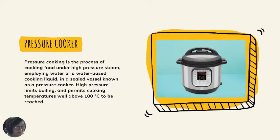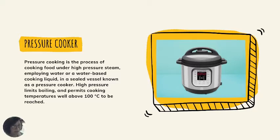Here are the tools and utensils used in fish processing. Number one: the pressure cooker. Pressure cooking is the process of cooking food under high-pressure steam, employing water or a water-based cooking liquid in a sealed vessel known as a pressure cooker. High pressure limits boiling and permits cooking temperatures well above 100 degrees centigrade to be reached.